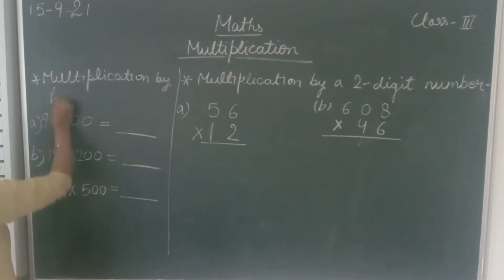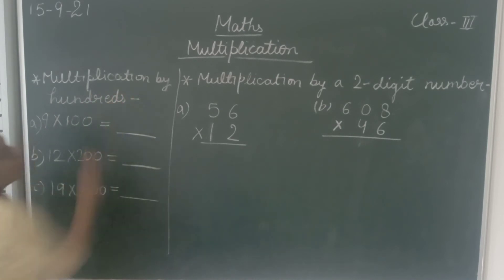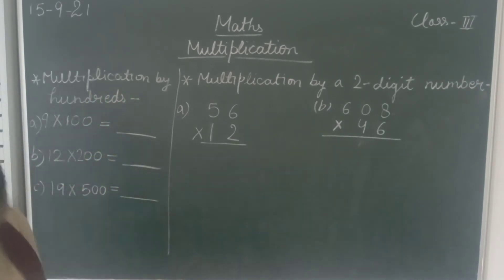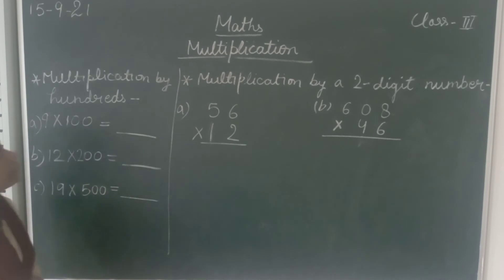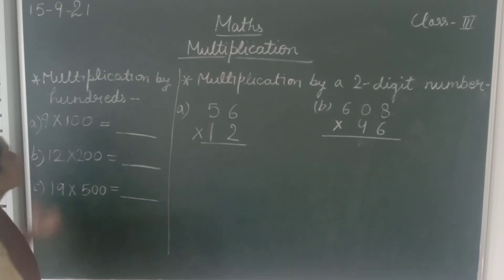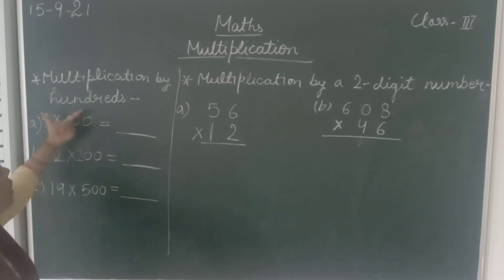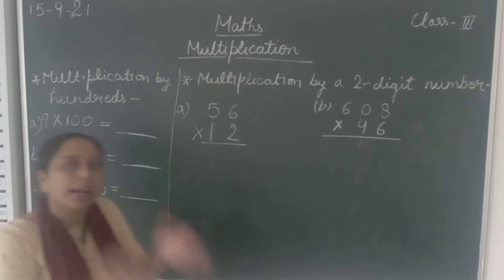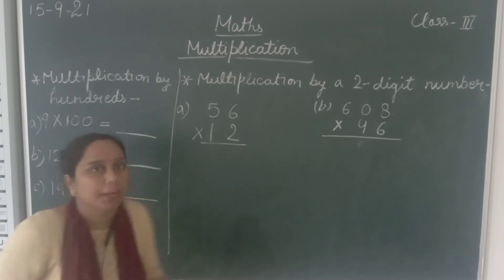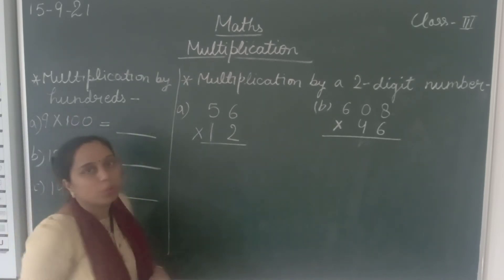In the last class we learnt the topic multiplication by 10s. In this class we will learn multiplication by 100s. So it's not just 100 — if it is only 100 then it means exactly 100. But 100s means there will be more than 100.